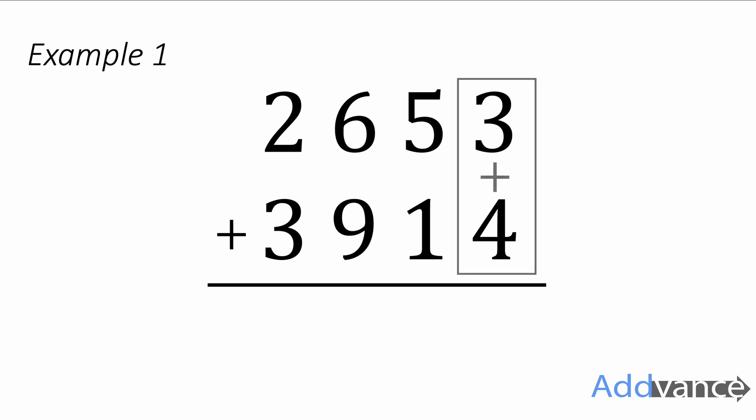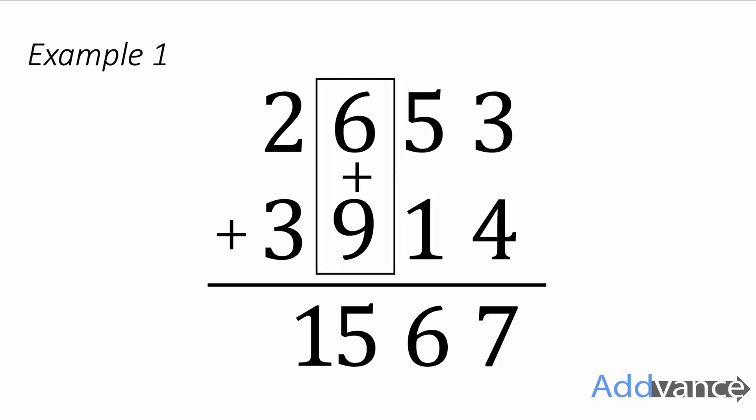I'm going to do three plus four is seven, five plus one is six. Six plus nine is fifteen and I'm writing this at the bottom. However the five stays at the bottom.